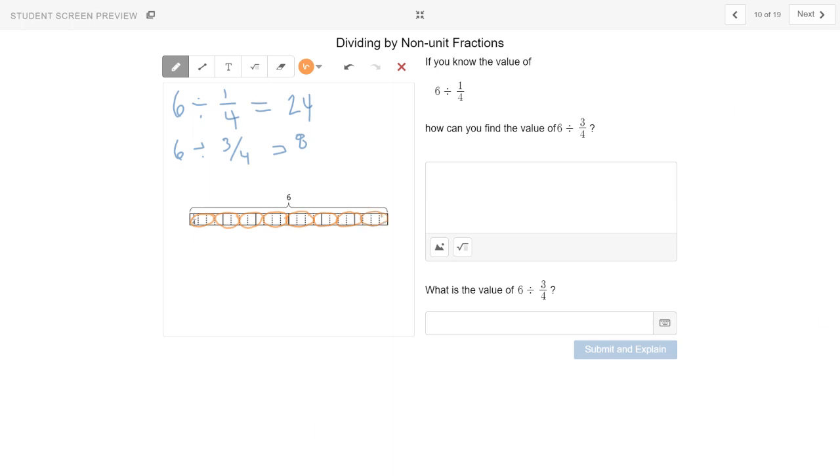So the value of six divided by three-fourths is eight, which also makes sense because eight times three-fourths, remember eight over one times three-fourths, and you can find ones in here, eight and four. If we divide them both by four, I get eight divided by four is two, four divided by four is one. And if I multiply, two times three is six, one times one is one. So eight times three-fourths is six. Six divided by three-fourths is eight.